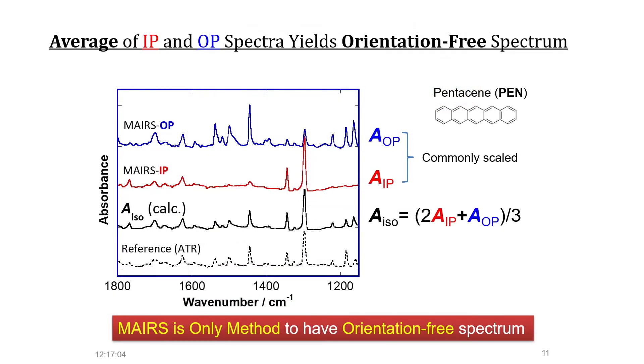Because the MAIRS IP and OP spectra have a common absorbance scale, the isotropic spectrum that corresponds to a randomly oriented sample can easily be calculated by average calculation. In fact, the calculated spectrum is fairly similar to the reference orientation-free spectrum. Now, we are ready for the reaction pursuit using the isotropic spectra, A_iso.